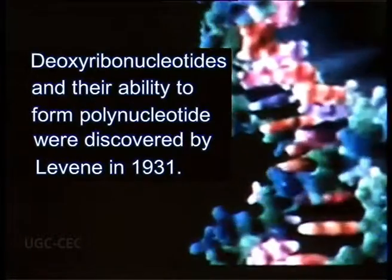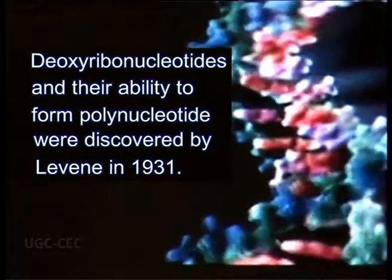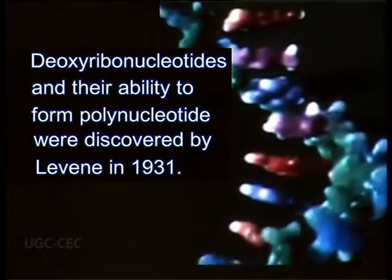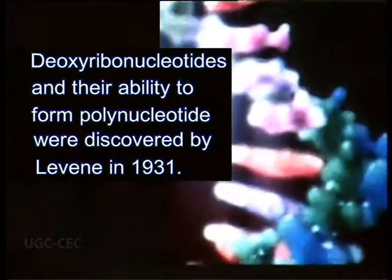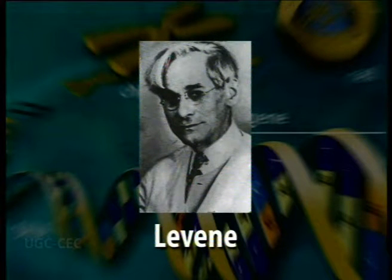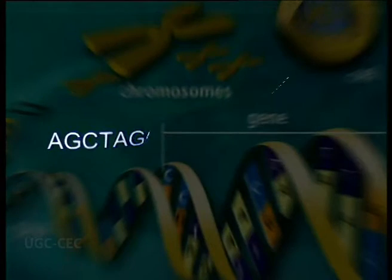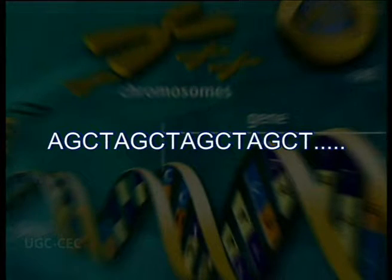The deoxyribonucleotides and their ability to form polynucleotides were discovered by Levene in 1931. Levene postulated that the 4 deoxyribonucleotides occurred in a regularly repeated tetranucleotide sequence: adenine, guanine, cytosine, thymine, then again adenine, guanine, cytosine, thymine, and so on.